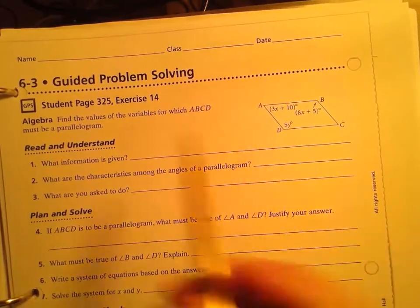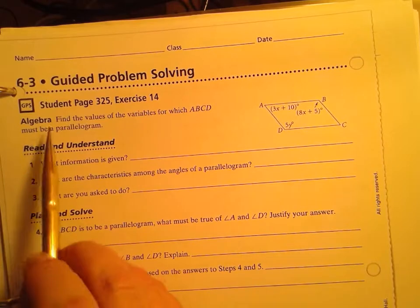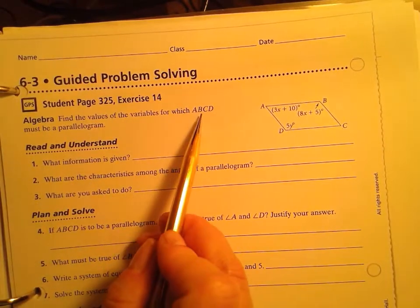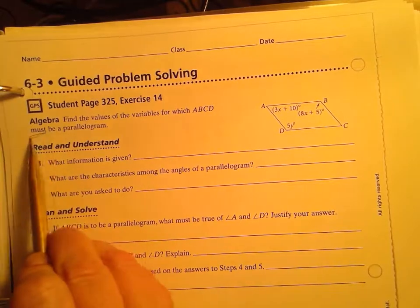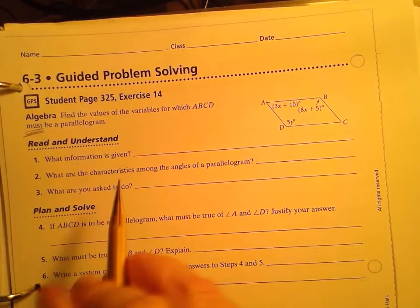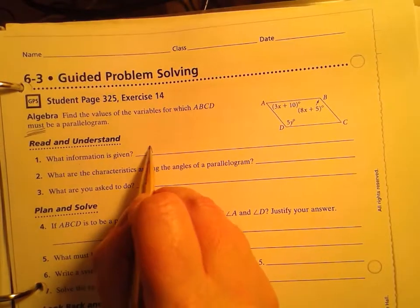Here's another one to practice with. Again, if your problem says find the values for the variables for which ABCD must be a parallelogram, the information that we're given is a parallelogram.